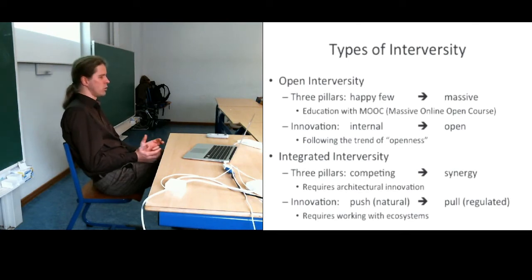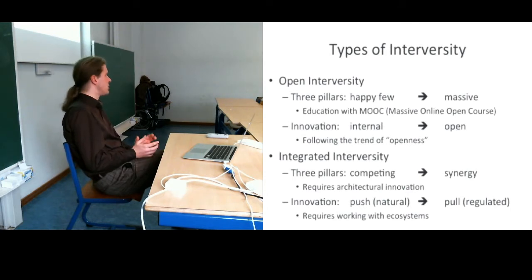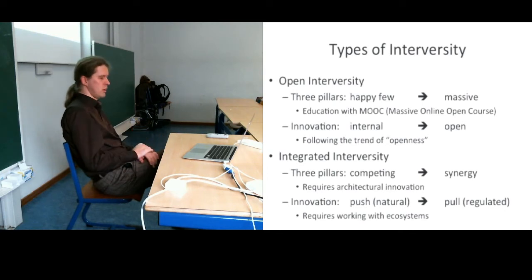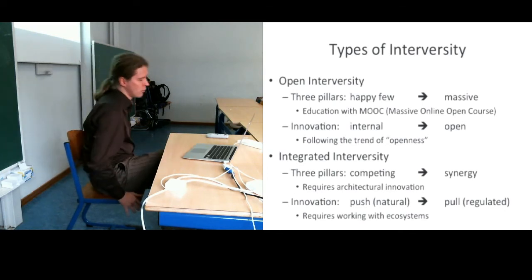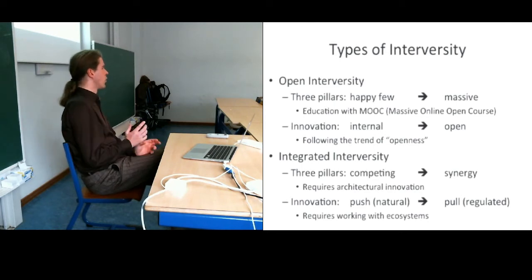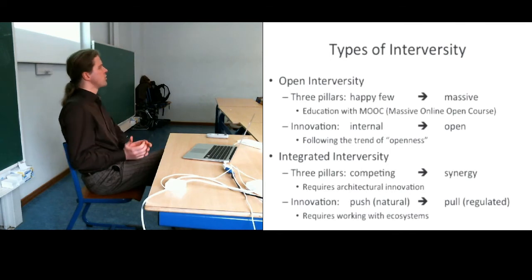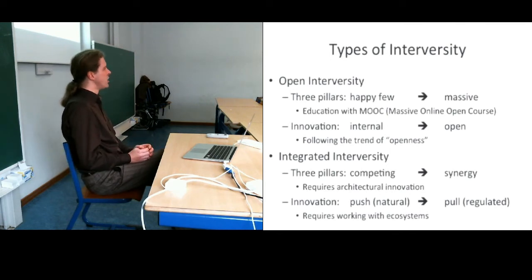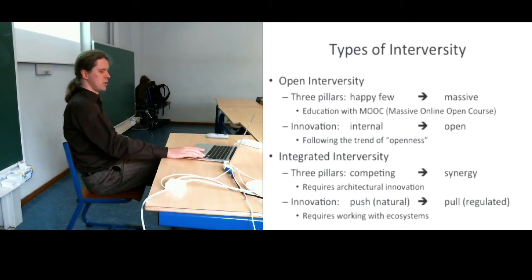What I'm mostly interested in is showing how an integrated university allows you to manage radical innovations. An innovation is only possible by an organization; inventions are possible by individuals. Innovation is only possible by an organization, and radical innovation is only possible by an ecosystem. The basic principle is we need to work with complexity.